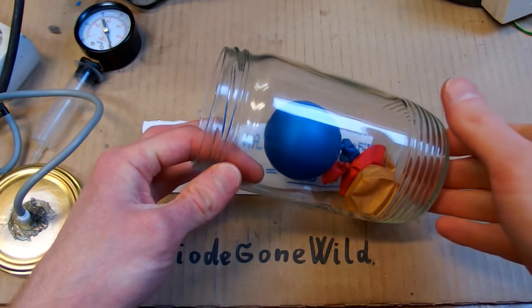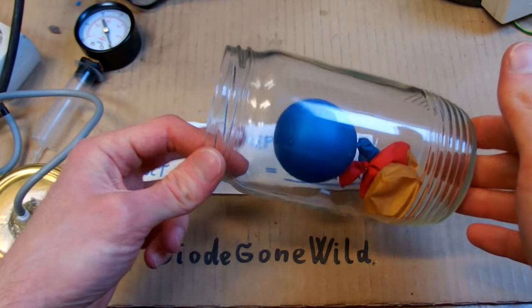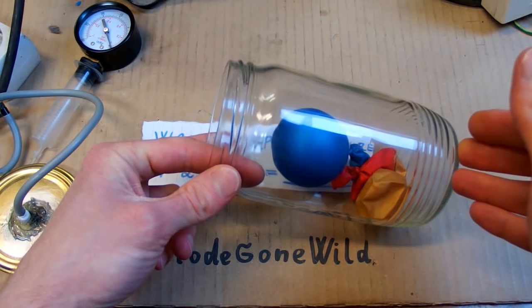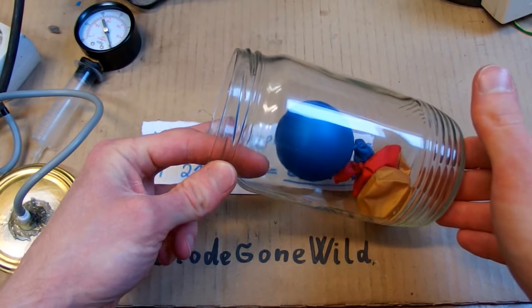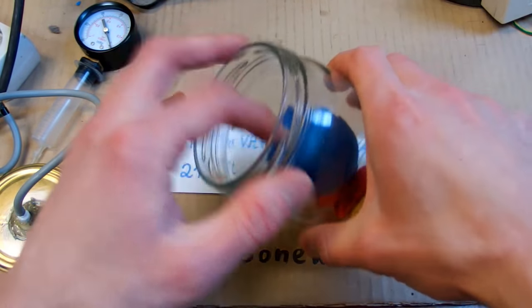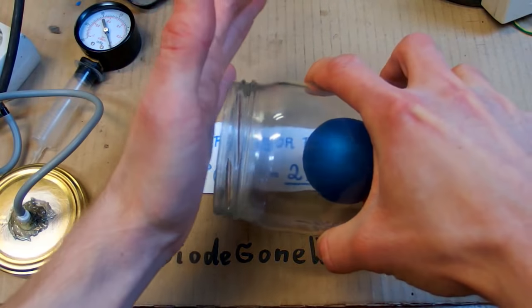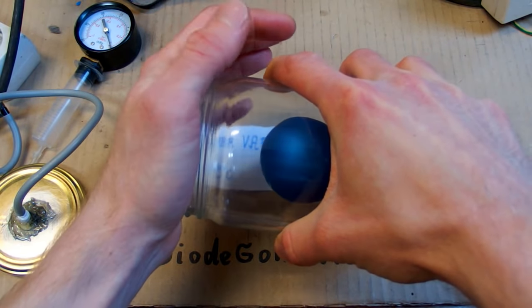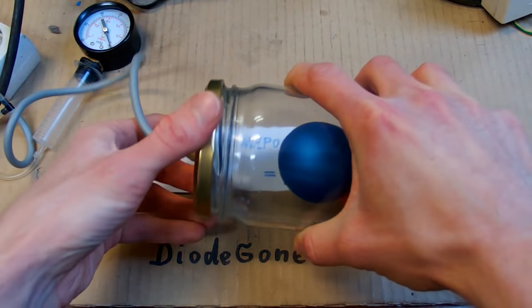So when you are canning food, you heat it up to a high temperature, high enough to destroy the bacteria and long enough, but also to create a vacuum. Because the water steam will displace the air from it. And when it cools down it will create a vacuum which can hold the lid on it.